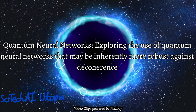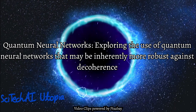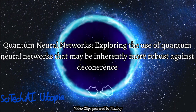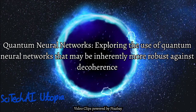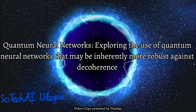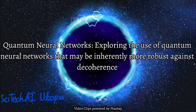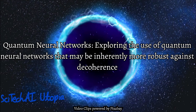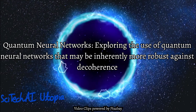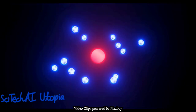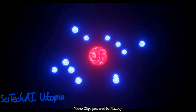Solution 22: Quantum Neural Networks. Quantum neural networks combine quantum computing principles with artificial neural networks. These systems have the potential to be more robust against decoherence due to their distributed and parallel processing nature. Exploring quantum neural network architectures aims to harness the benefits of both quantum and classical machine learning.